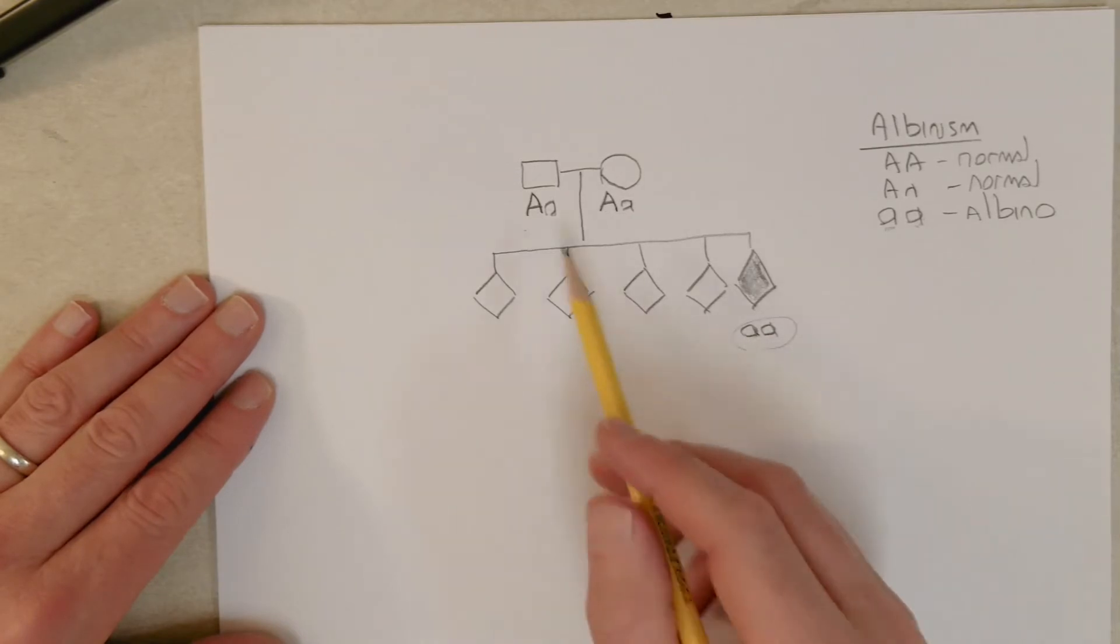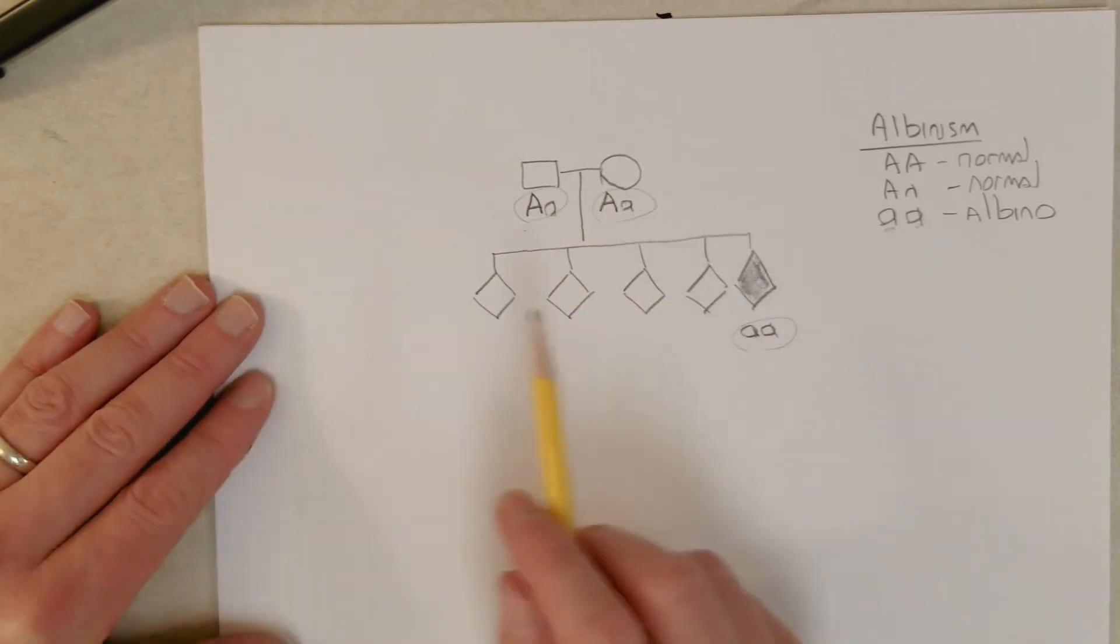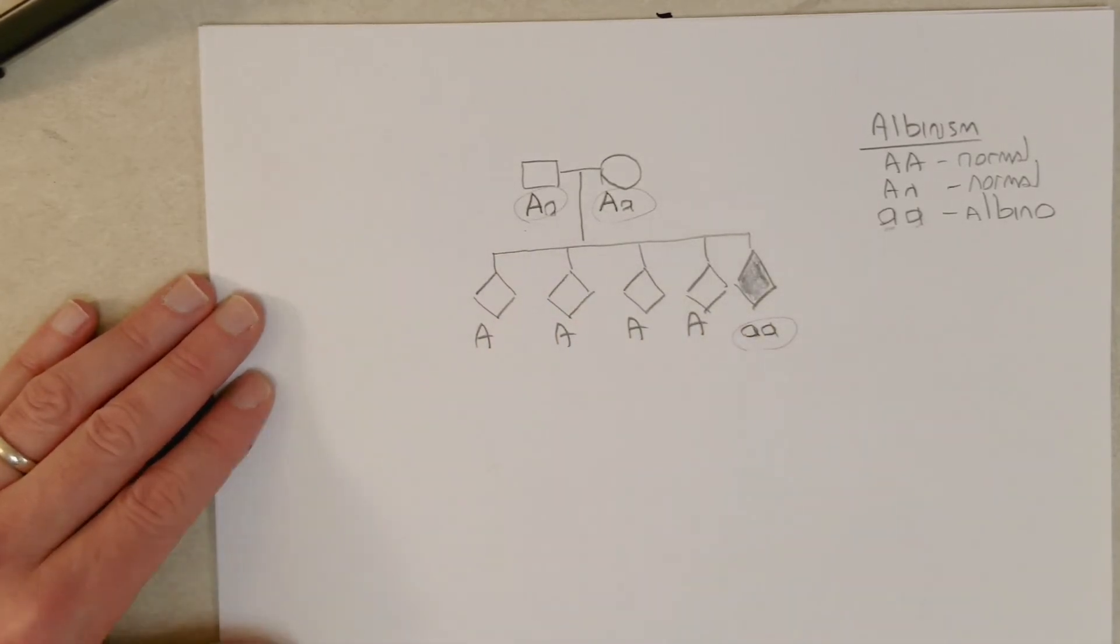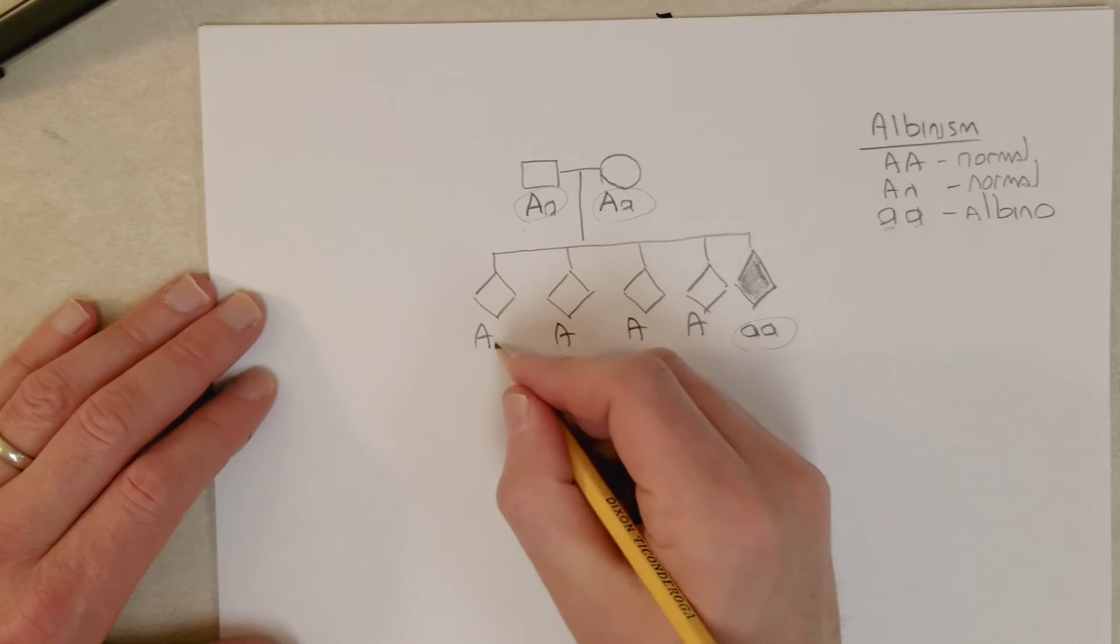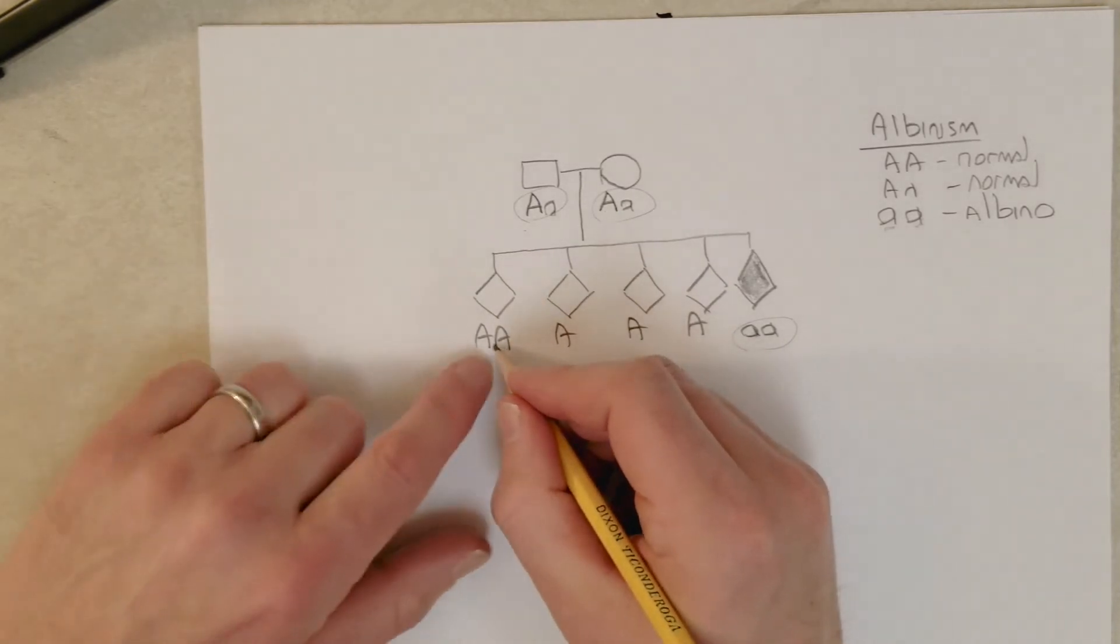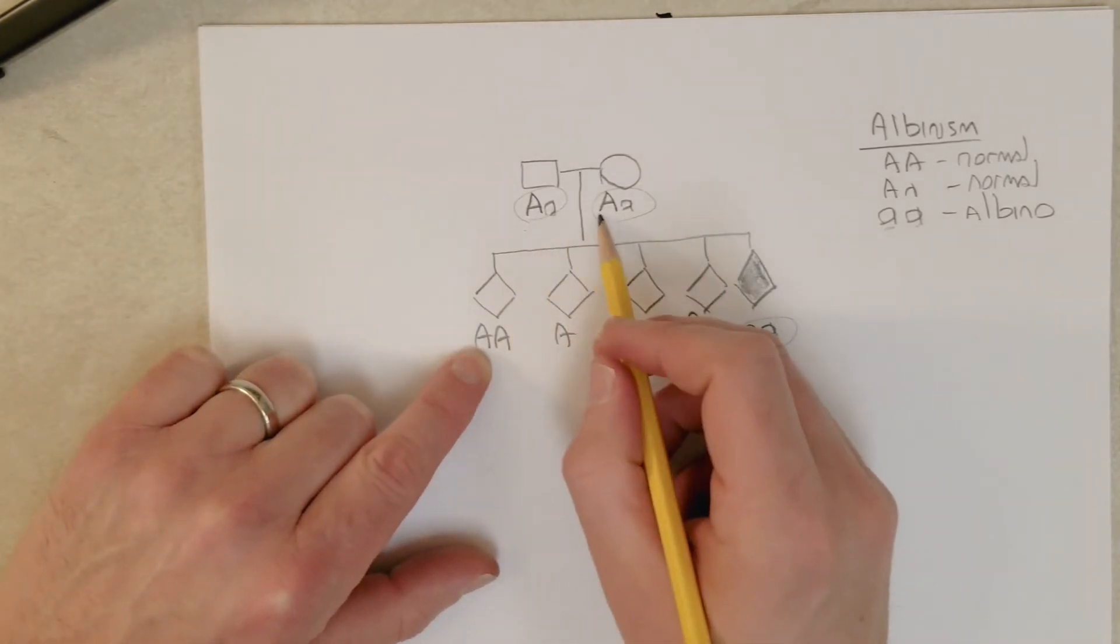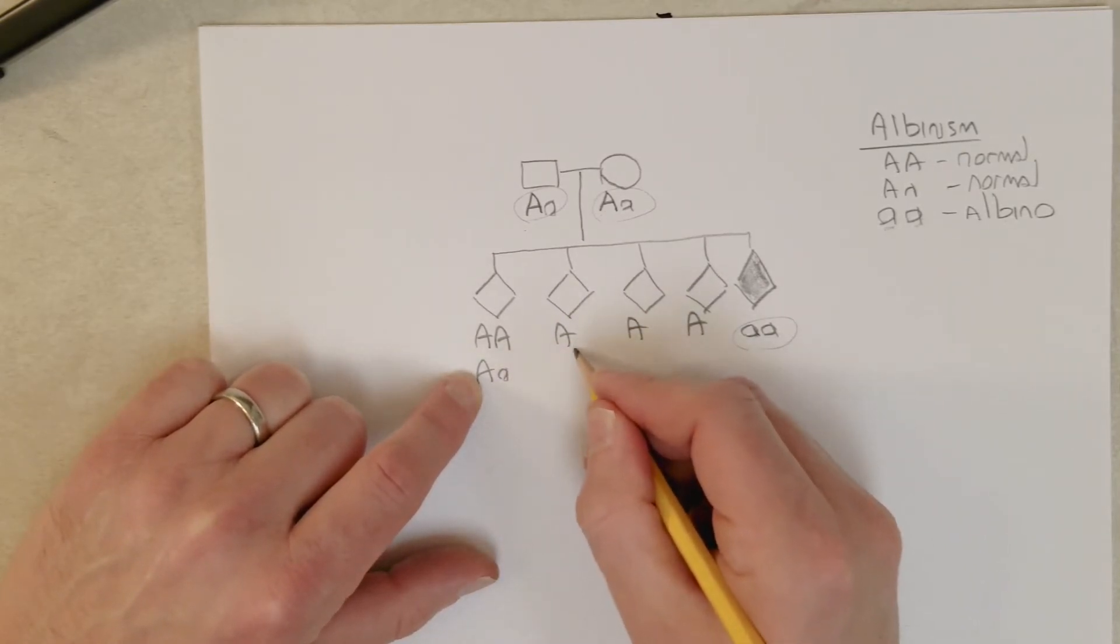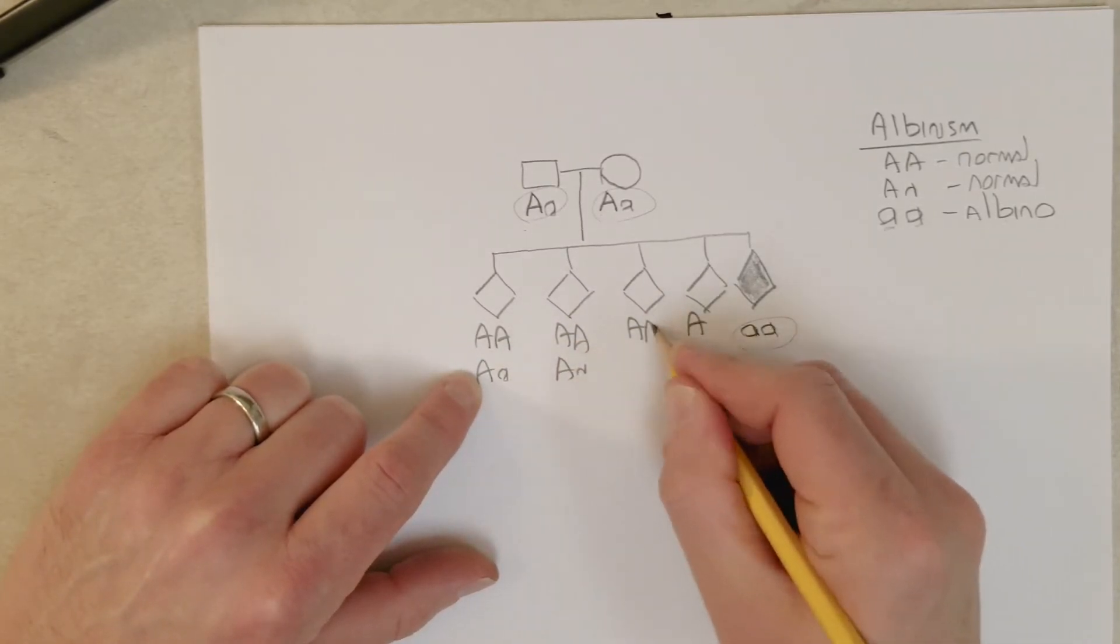Now we also know that all of the normal kids have to have at least one big A allele because none of them have albinism. So they could get two big A's, one from each parent, or they can get one big A from one parent and one small a from the other. That would result in the same phenotype.